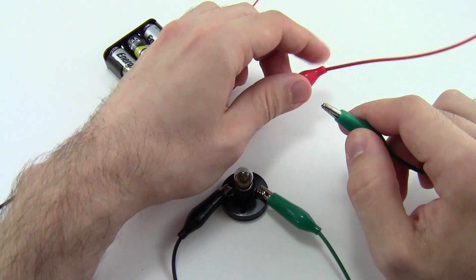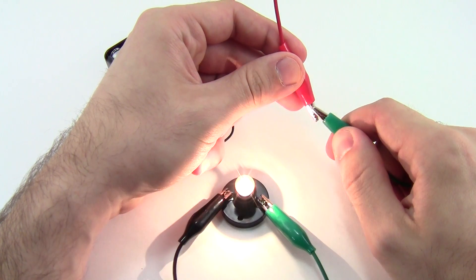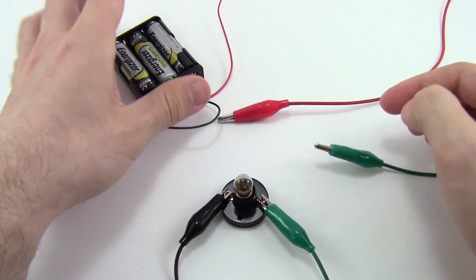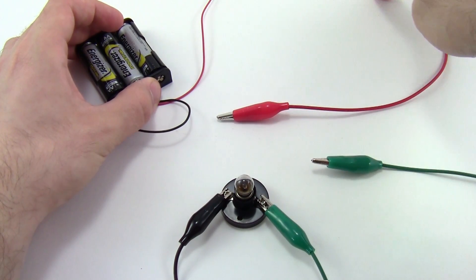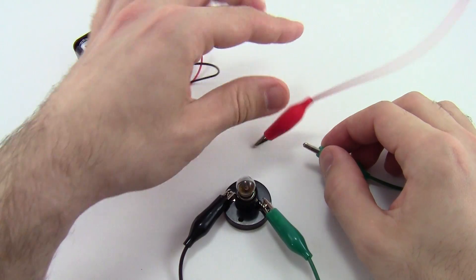However, if I take the free ends of the red and green alligator clips and touch them together, I have a closed circuit, so electricity can flow in a loop through this red wire, through the green alligator clip, through the light bulb...